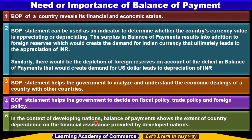In the context of developing nations, balance of payment shows the extent of a country's dependence on financial assistance provided by developed nations. Since developing nations sometimes have a deficit in their balance of payment — meaning their payments exceed receipts — they can assess how much financial assistance is being provided by developed nations to cover the deficit, and accordingly formulate suitable policies to become economically independent.